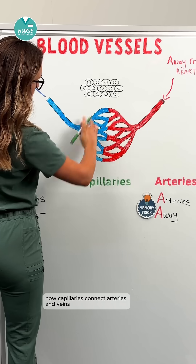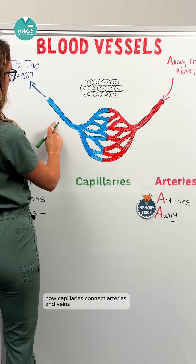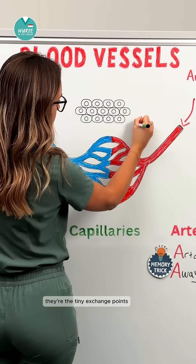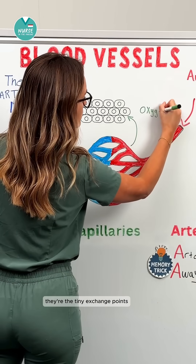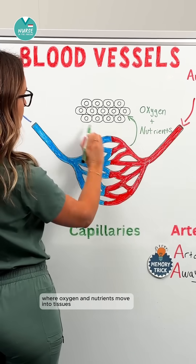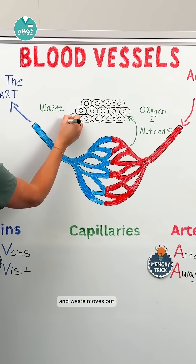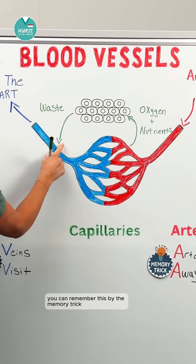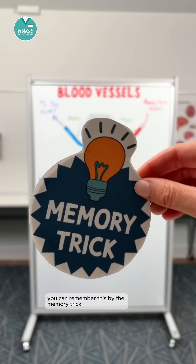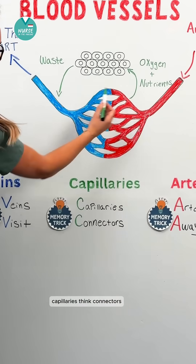Capillaries connect arteries and veins. They're the tiny exchange points where oxygen and nutrients move into tissues and waste moves out. You can remember this by the memory trick: capillaries — think 'connectors.'